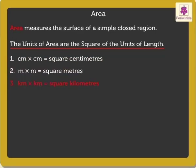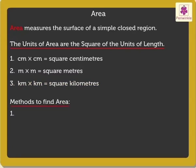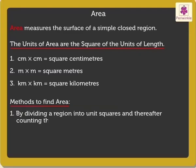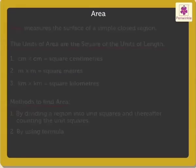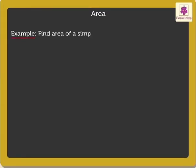There are two methods to find the area. One is by dividing a region into unit squares and thereafter counting the unit squares, and the other is by using a formula. Let's learn about each of these in a bit of detail. First, let's see how to find the area of a simple closed region by counting unit squares when the region is divided into unit squares.